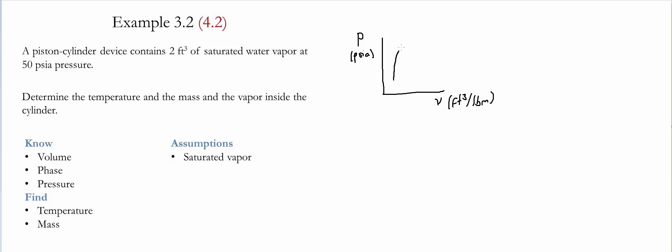Then we have our conditions, and we draw a line for 50 psia, which is the condition that we have. Then we draw the saturated temperature line, and what we're looking for is this point, since it's saturated water vapor, and that is equivalent to a specific volume v_g.